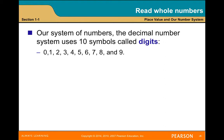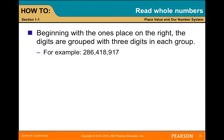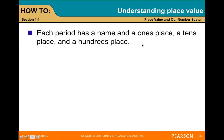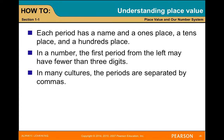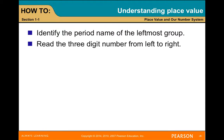Our number system uses the decimal number system, which uses 10 symbols called digits running from 0 to 9. This is a place value system — a number system that determines the value of a digit by its position in a number, beginning with the ones place on the right. The digits are grouped with three digits in each group, separated by commas. Each group is called a period, and each period has a ones place, a tens place, and a hundreds place.